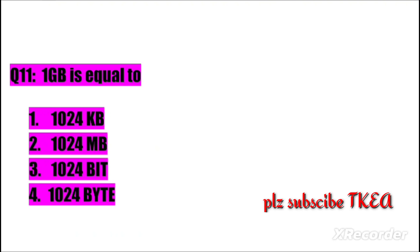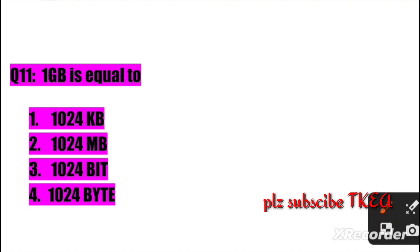Question number eleven: 1 GB is equal to? Option one: 1024 KB, two: 1024 MB, three: 1024 bits, four: 1024 bytes. The right answer is 1024 MB.